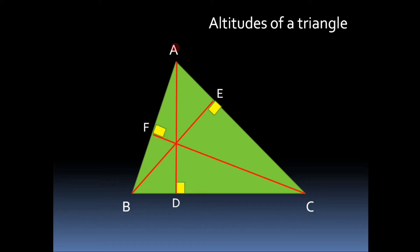As there are three vertices for a triangle, we can draw three altitudes for any triangle. The property of these altitudes is that all three altitudes intersect at the same point. As we can see here, these three altitudes intersect at point O, which means they are concurrent — they intersect each other at one point.